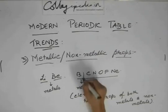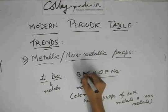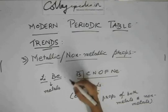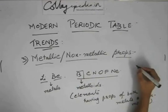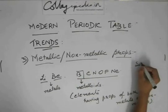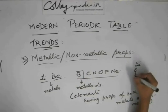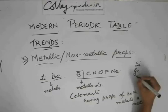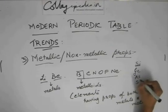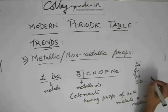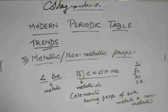So boron is a metalloid, and other metalloids are silicon, germanium, arsenic, and antimony. These are all metalloids.